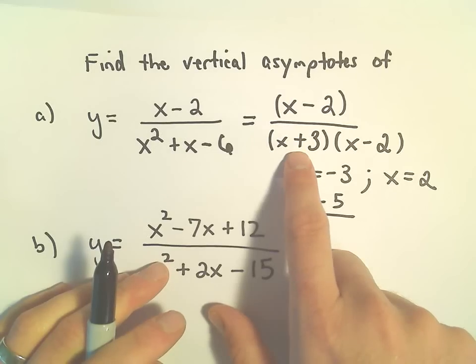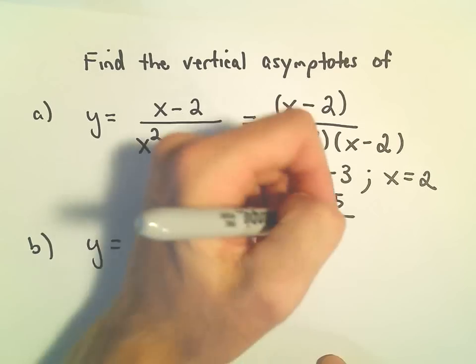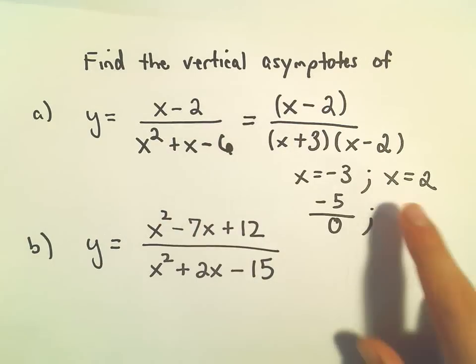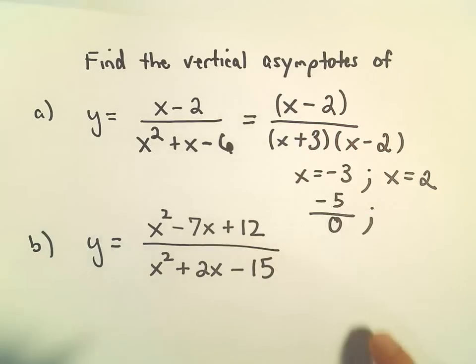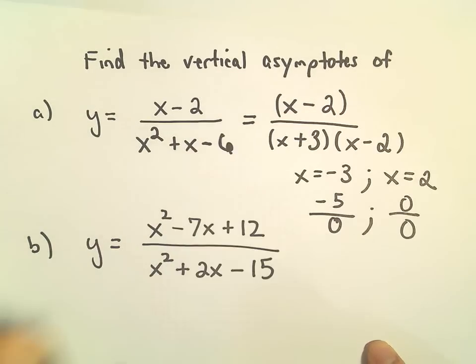And if we plug negative 3 into the first factor here, we would get 0. And notice if we plug 2 in, clearly we're going to get 0 over 0 in that case.